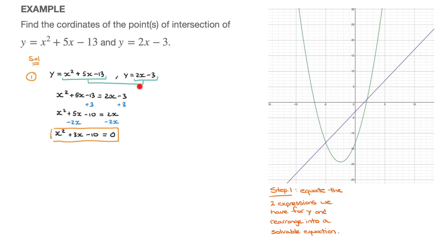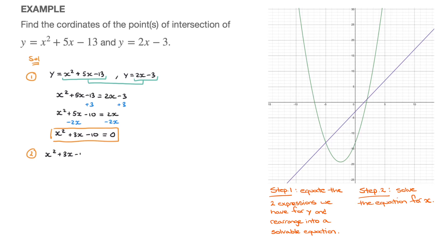That's step 1 done. We equated the two expressions for y and rearranged until we had x squared plus 3x minus 10 equals 0. Moving on to step 2, we need to solve this equation. We're dealing with a quadratic equation, so we could either use the quadratic formula, or attempt to solve it by factoring.